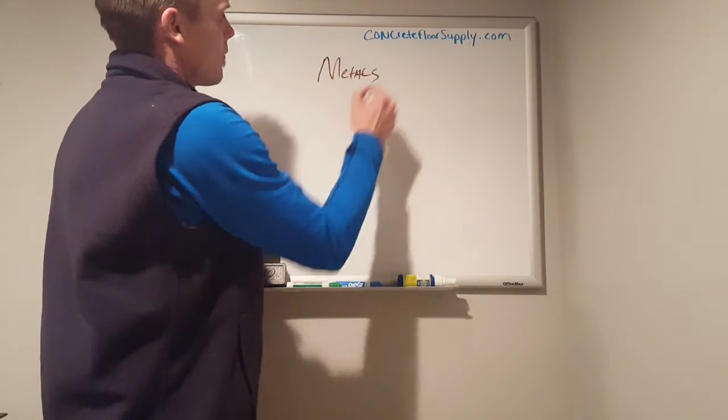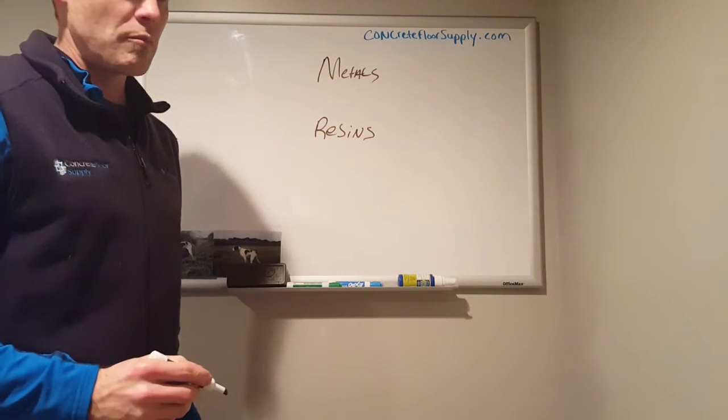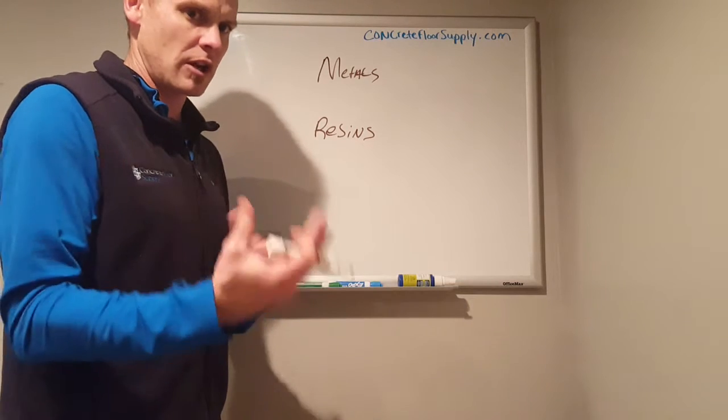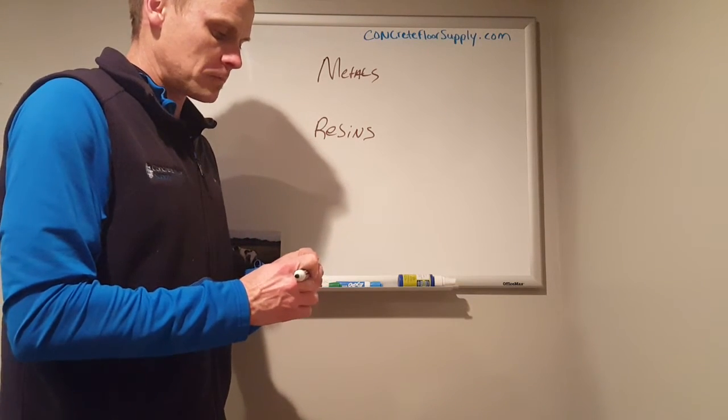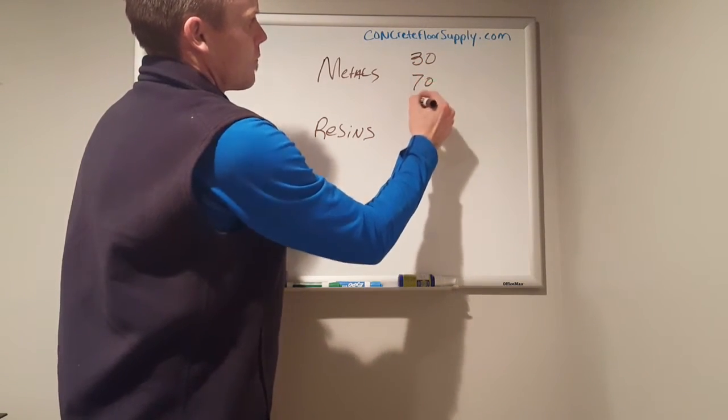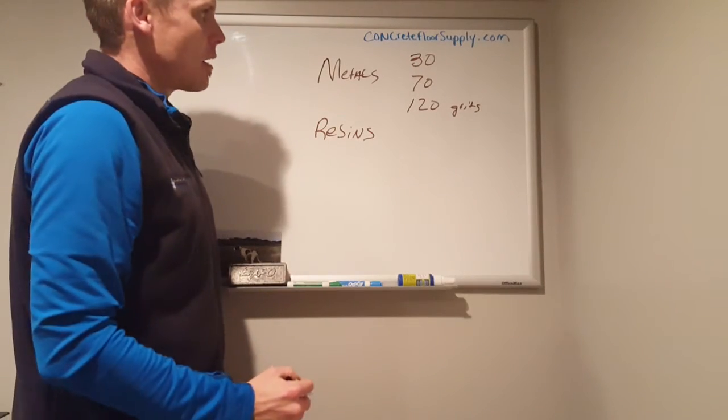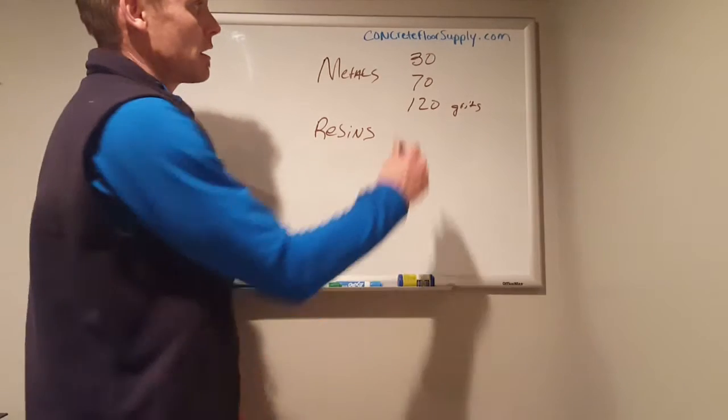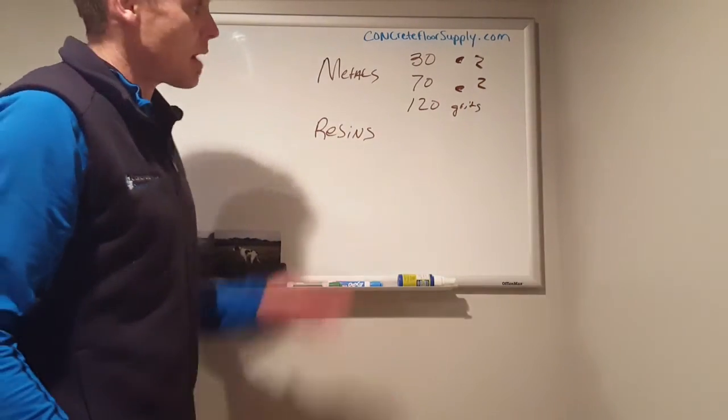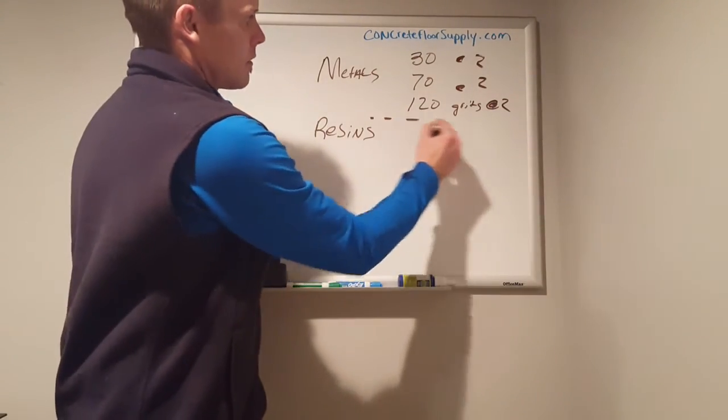Many times on a floor people start with a metal to start polishing although that isn't true as much anymore because concrete finishing has improved greatly. Now these are all grits 30, 70, and 120 metals. Let's say you start with the heaviest grit metal you can, you start with a 30 and you make a couple passes, 70 metal and you make a couple passes, 120 metal and a couple of passes and then you move on to resins.